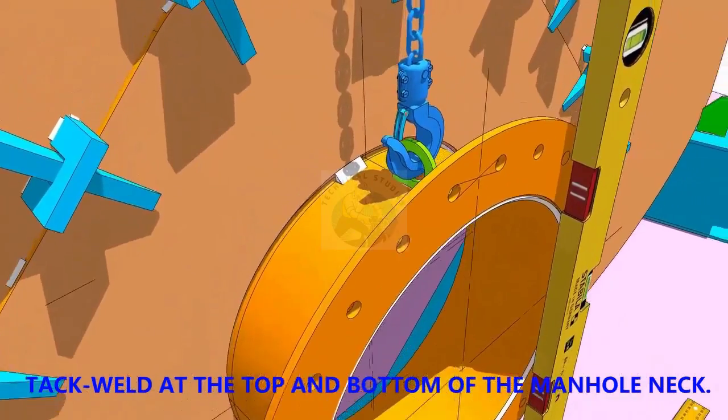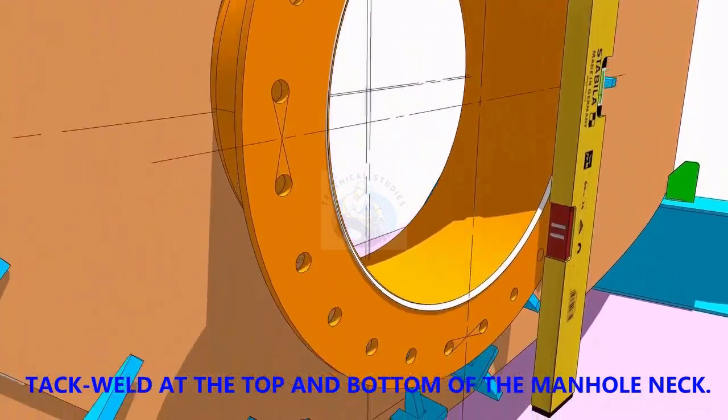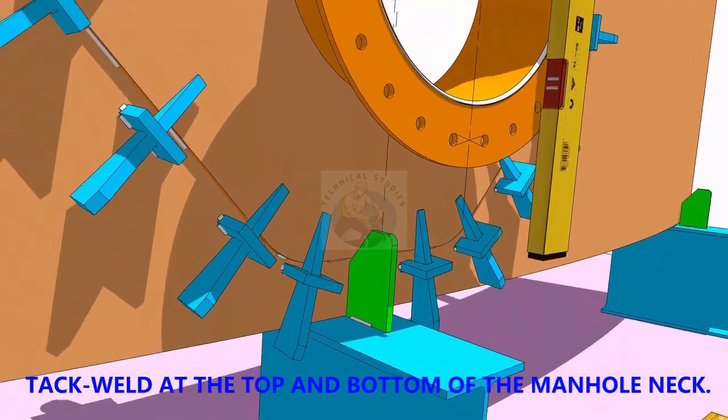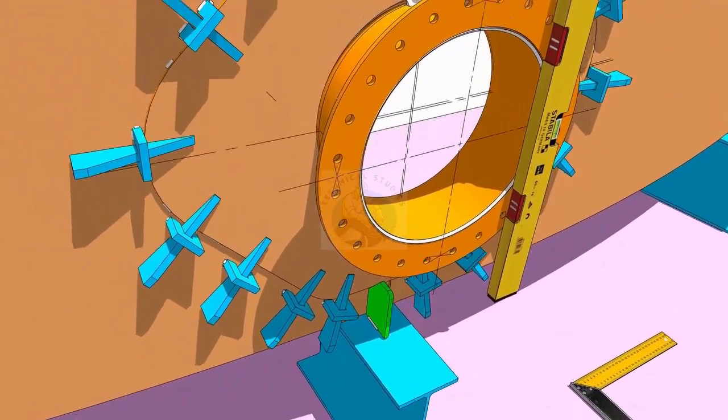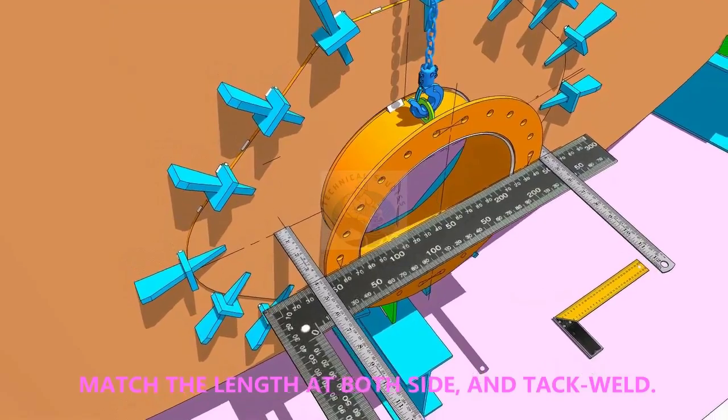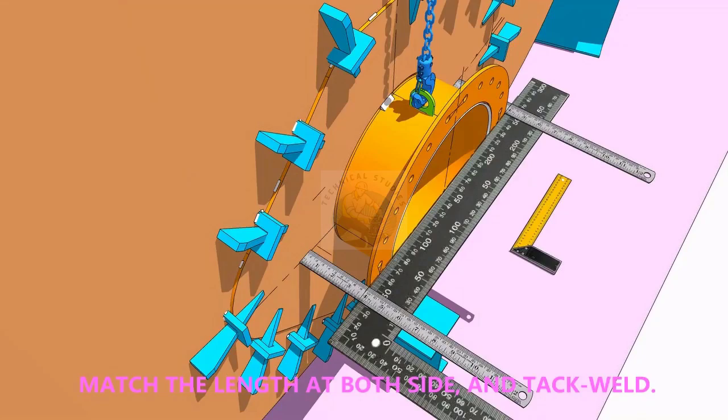TAC weld on the top and bottom side in the joint. Equal the distance on both sides of the flange as shown and TAC weld on both sides.